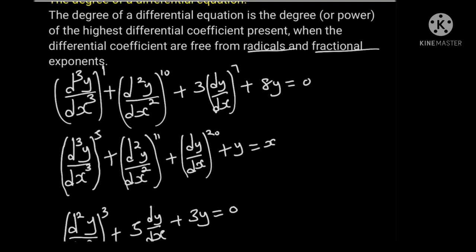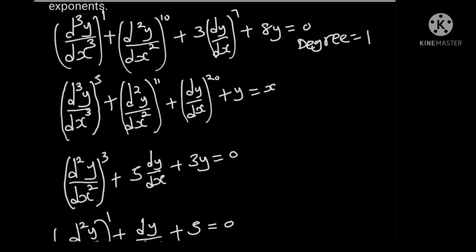In this differential equation, the highest differential coefficient is d cubed y over dx cubed. The power of this highest differential coefficient is 1, therefore the degree is 1. In the second example, the highest differential coefficient is again d cubed y over dx cubed, and the power is 5, therefore the degree is 5.